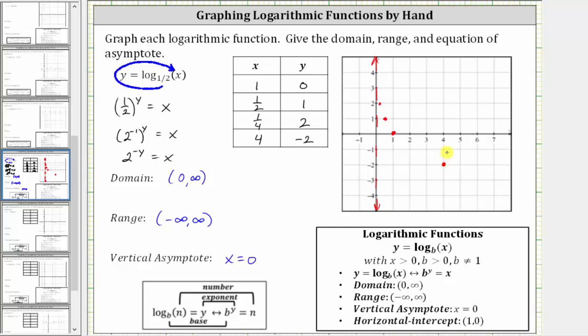So we know the function passes through these four points and approaches the vertical asymptote. And therefore, the graph looks something like this. I hope you found this helpful.